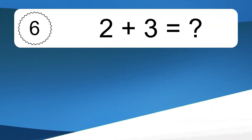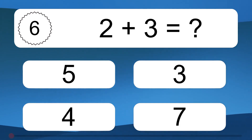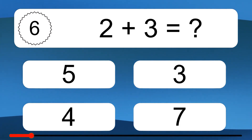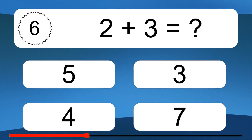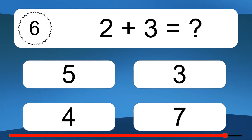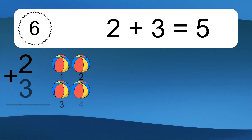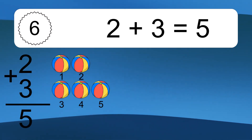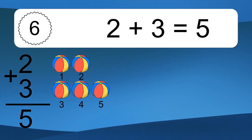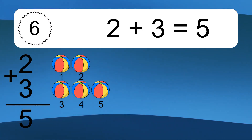2 plus 3 equals what? 2 plus 3 equals 5. Let's count it. 1, 2, 3, 4, 5.